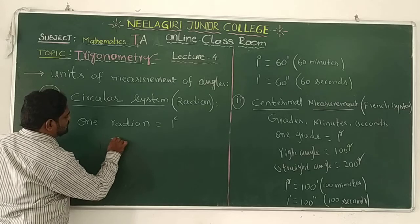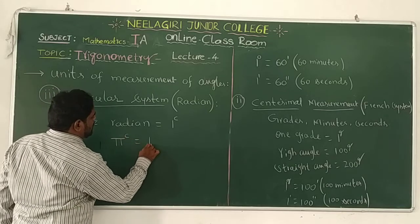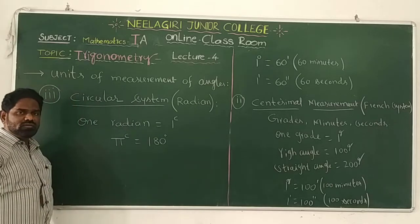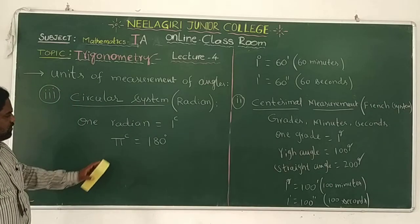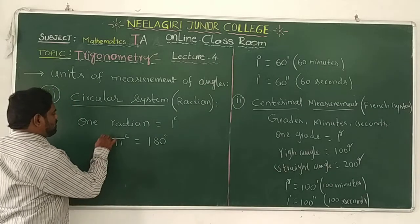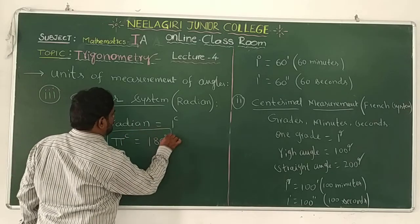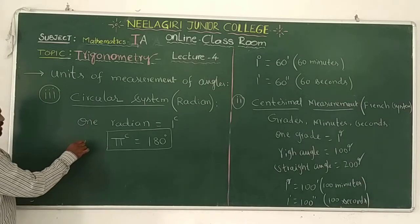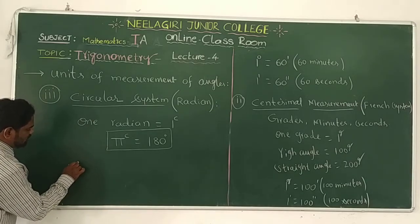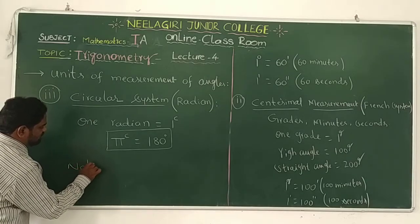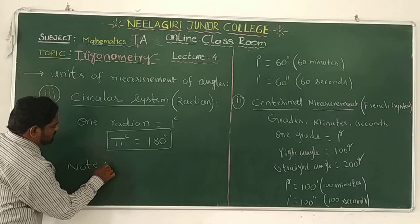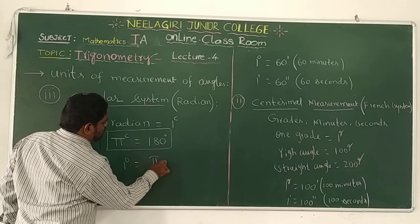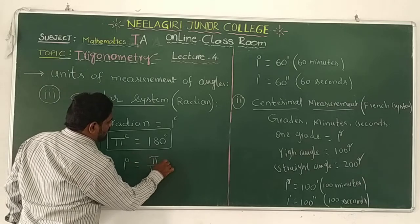Pi radians equals 180 degrees — this is the relation between radians and degrees. One important note condition: to convert degrees into radians, wherever one degree appears, multiply by pi by 180 radians. To convert radians into degrees, wherever pi appears, replace it with 180 degrees.